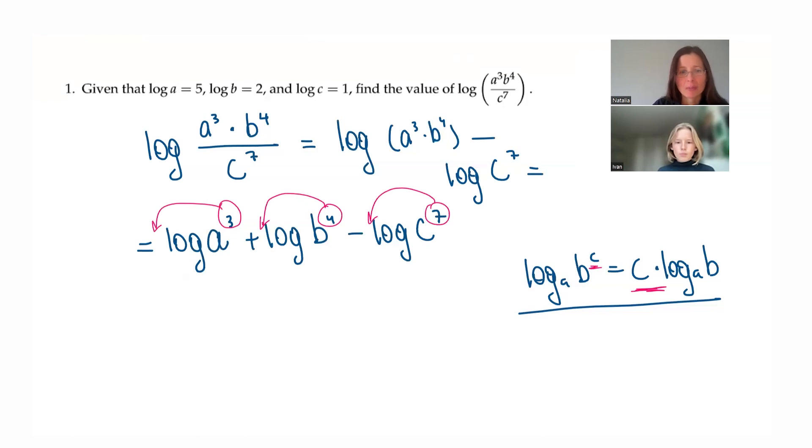All right, so let me write it. So we have three log A plus four log B minus seven log C. What's the last step for us?